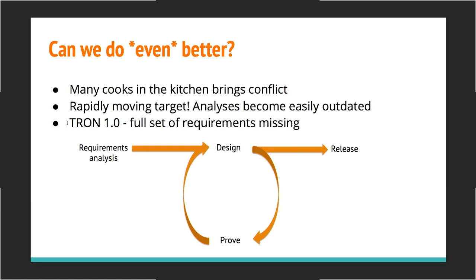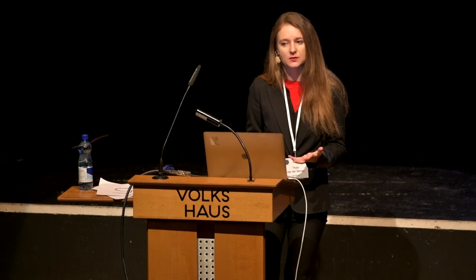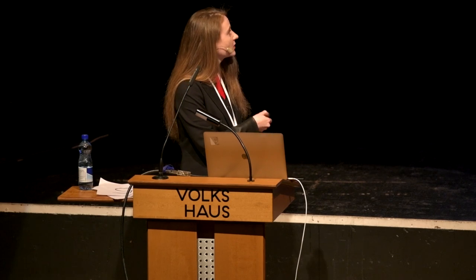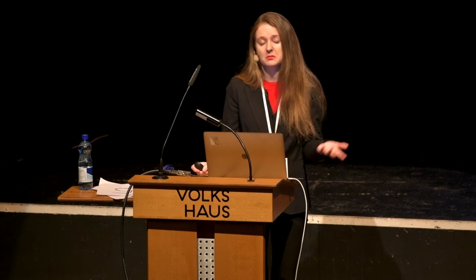The process has been successful, but could we do better? Many contributors in the kitchen bring conflict, and the TLS 1.3 standard has been a rapidly moving target, making analyses quickly outdated. A full set of requirements was also missing at the onset. An alternative cycle might be: requirements, then a few iterations of design-improve, then release. However, this may be naive or unrealistic because for complicated protocols like TLS, design requirements may only emerge during the design phase itself.